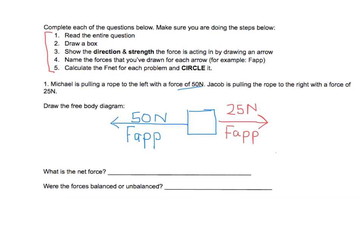That's all the information that the problem gave us, so now we need to calculate the net force. When arrows are working in opposite directions, as they are in this case, we subtract. You have 50 Newtons going to the left, 25 Newtons going to the right, so you subtract the two — 50 minus 25. In this case, the net force is going to be 25 Newtons.